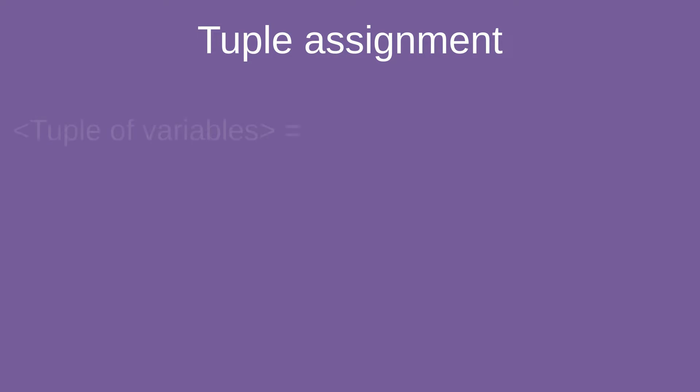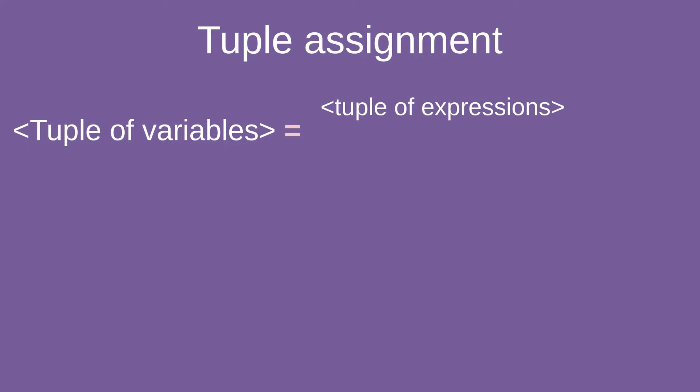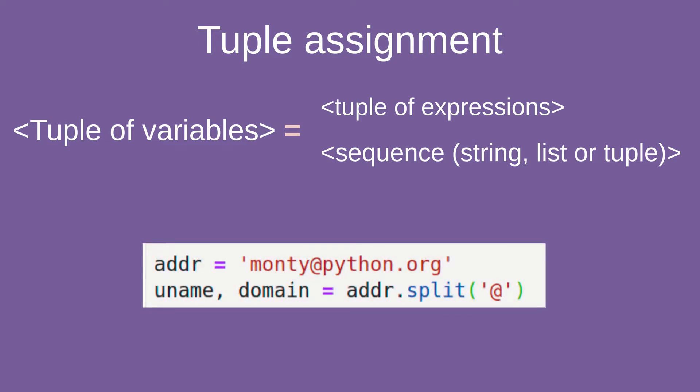What is tuple assignment? There is a really good formula explaining this. On the left we have a tuple of variables. On the right we can have a tuple of expressions or we can have a sequence. Let's see this in a simple example. If we have an email address and we split it into two parts, we can assign them to two variables by using tuple assignment. On the left you can see a tuple with two variables: uname and domain.